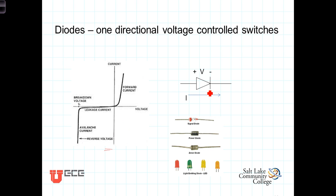This is the symbol for a diode. The arrowhead in the diode symbol points in the direction of current flow. As mentioned, some diodes are used as voltage-controlled switches. Other diodes have the unique characteristic of emitting light as they begin to conduct or while they're conducting, and those diodes are known as light-emitting diodes.